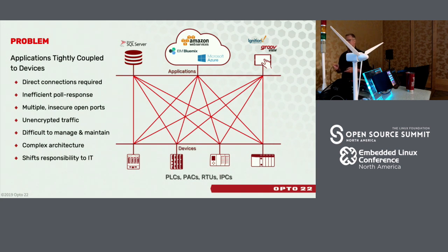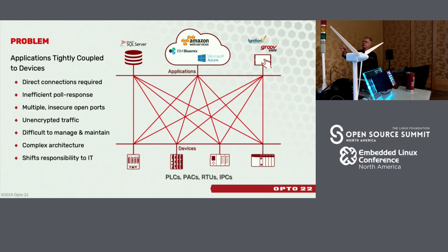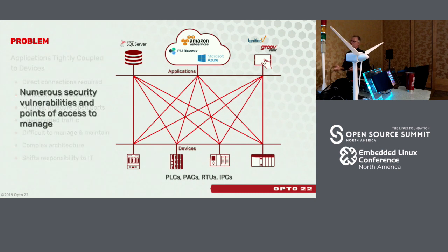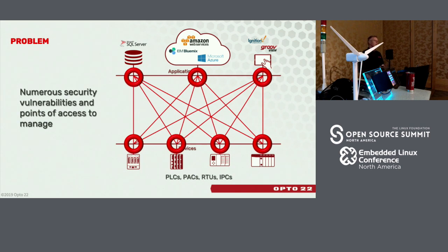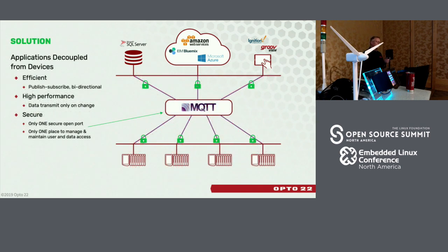We've got another problem to solve: the notion that applications are so tightly coupled to devices. This happens in IT to a smaller degree, but in OT it is prevalent and it is a mess. There's a lot of unencrypted traffic flowing all over a network, you've got to run to IT to protect these networks, it's riddled with security loopholes — the idea of opening ports on devices or opening firewalls. It's just too difficult and very tough to manage.